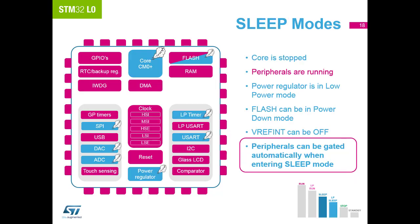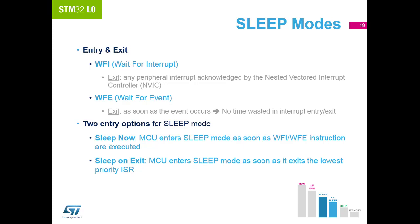Both run mode and low power run mode have their respective sleep modes. Sleep mode sends the core to sleep and automatically any peripherals that have previously been configured, leaving only the required peripherals active. As the core is asleep, instructions are not required so the flash can also be down powered along with the VREF. Sleep mode is controlled by two instructions to sleep now, or by configuration to sleep on exit. Exit from sleep mode is via one of the running peripherals or the reset circuit.